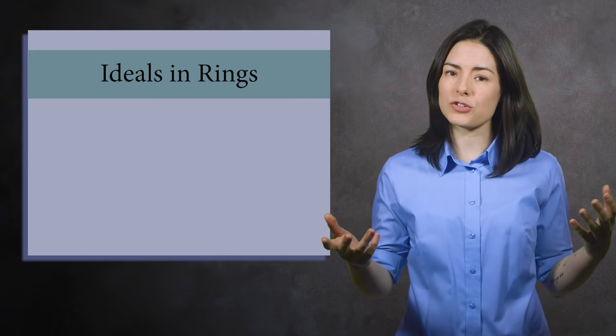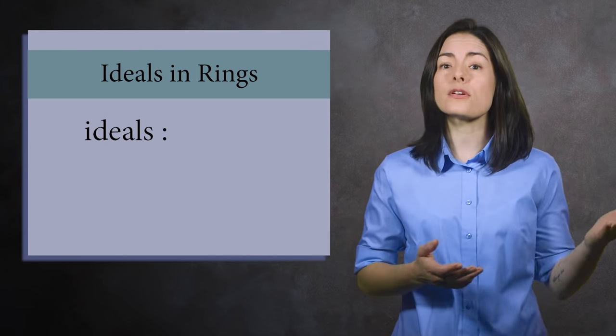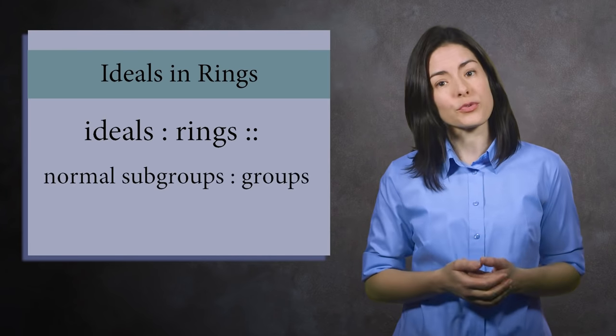There are many ways to motivate the concept of an ideal in abstract algebra. Perhaps the simplest way is with an analogy. Ideals are to rings as normal groups are to groups.